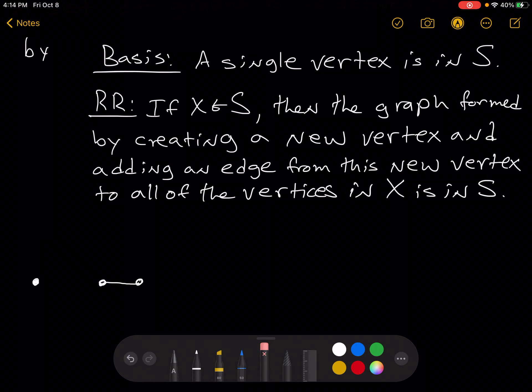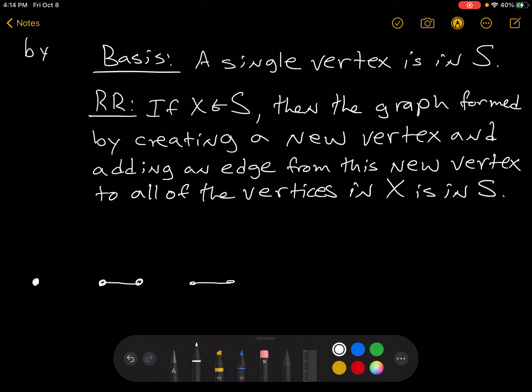Okay, so then using the recursive rule again, here's the stuff from before. Now create a new vertex and add it to all the vertices in X. All the vertices in the thing that came before.